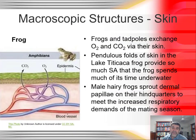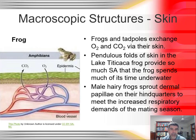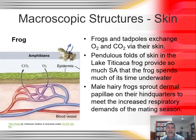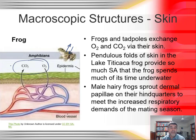Gas exchange structures in amphibians are slight variations on what we've seen before. The most important feature for frogs and some toads is their ability to exchange gases directly through the skin. Frogs and other amphibians tend to have very moist skin, and since respiratory surfaces need to be moist for gases to dissolve in water and diffuse across, that moist skin is a useful starting point. Carbon dioxide and oxygen are exchanged between the skin and blood vessels sitting just below the skin's outer surface.